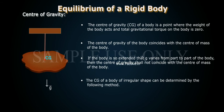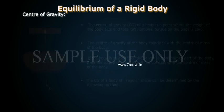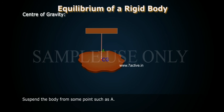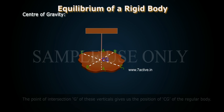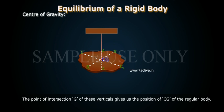The CG of a body of irregular shape can be determined by the following method. Suspend the body from some point such as A. Draw the vertical line AA1. It passes through CG. Similarly, draw vertical lines BB1 and CC1 by suspending the body from some other points B and C, etc. The point of intersection G of these verticals gives us the position of CG of the irregular body.